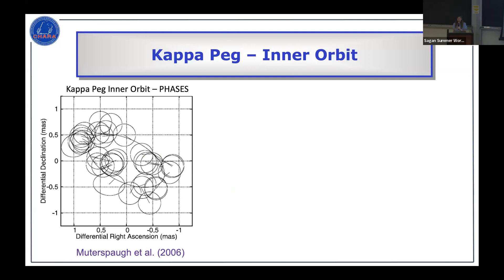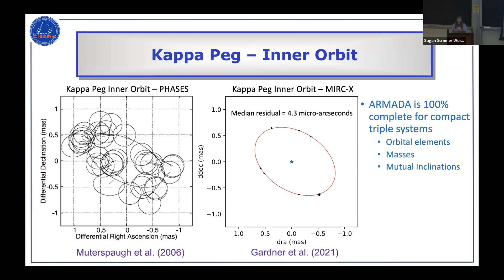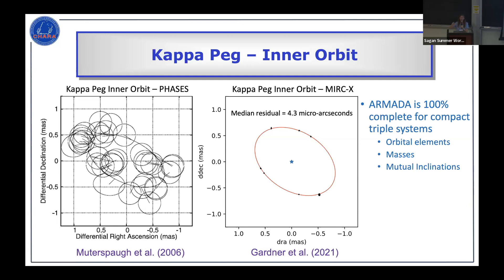Comparing the state of the art from the PHASES survey to what you can achieve now with MIRC-X at CHARA, you get about four micro-arc-second precision on the inner orbit of this hidden companion. For the ARMADA sample, you can detect nearly all stellar mass companions in these binary systems, determine orbital elements and masses, and measure mutual inclinations — the relative orientation of the inner orbit to the outer orbit.